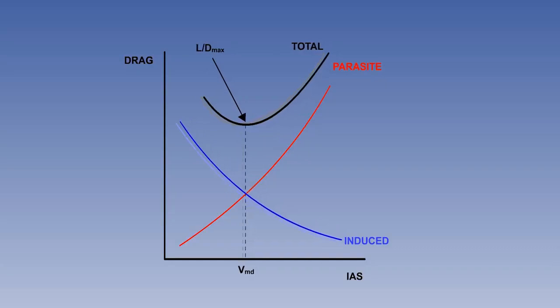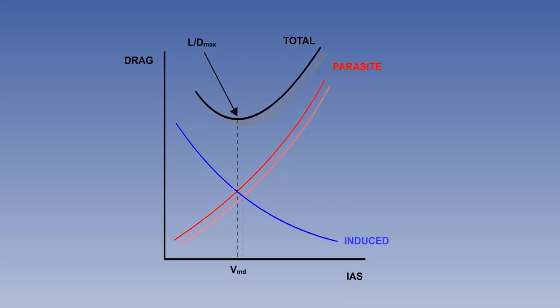Changes in configuration, as for example on the approach to land, where landing gear, flaps and air brakes or spoilers will be extended in a sequence appropriate to type, will create significant increases in parasite drag, but differing variations in induced drag. More lift with flaps with the increased CL, less with spoilers. The overall result is an increase in total drag, but a reduction in the min drag speed, with the curve moving up and to the left.